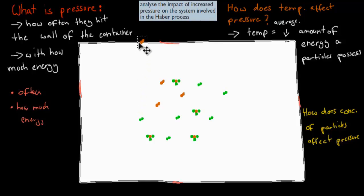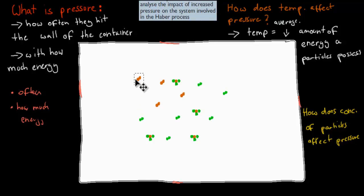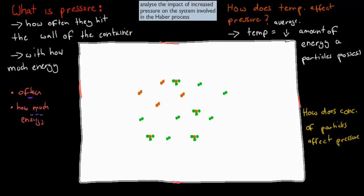If a particle hits slower, it hits less often. But not only how often, but how forcefully it hits as well. If it has lots of energy, it's going to apply lots of pressure, and then the pressure itself increases. So pressure is all about how often particles hit and how much energy they have when they hit.